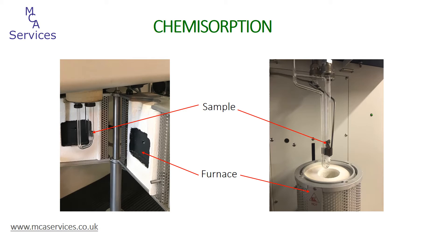Before looking at these in more detail, it's useful to have a quick look at the equipment we use here at MCA Services. We have two instruments, both made by Micromeritics. On the left-hand side is an Autochem 2, and on the right-hand side a 3Flex with chemisorption and TCD options. Both photos show a close-up of the analysis tube. A flow-through tube is used for all analyses, although the flow-through capability is only used for the dynamic technique. Both tubes have a platinum-alumina sample in them, sitting on a quartz wool plug to stop any sample going through the tube. The sample thermocouples can also be seen — to the right on the 3Flex, and to the left on the Autochem. In both photos we can also see the chemisorption furnace.